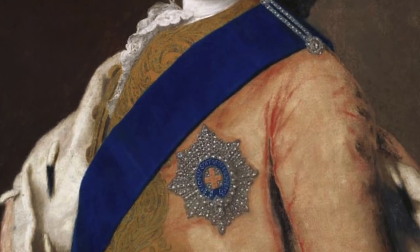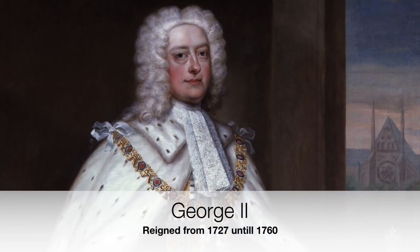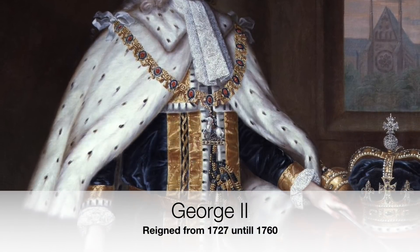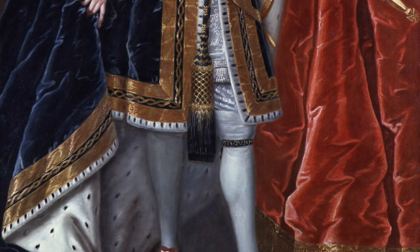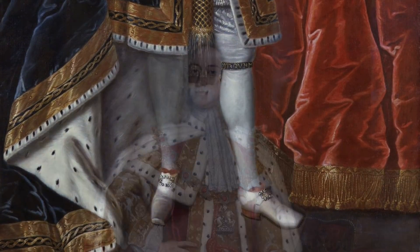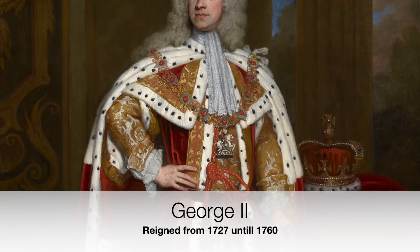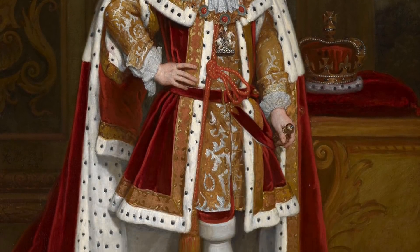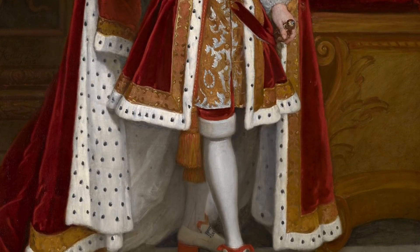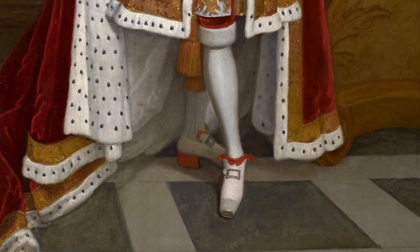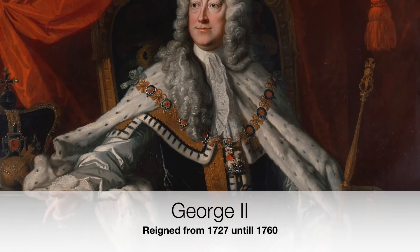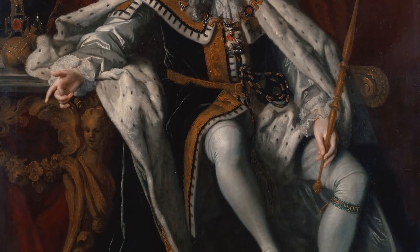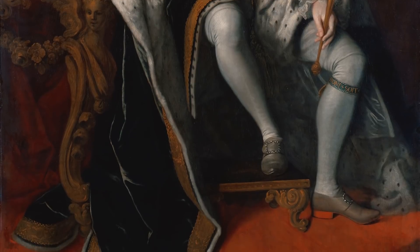Frederick was the direct descendant of King George II, his father. George II was King from 1727 until his passing in 1760. He is the most recent of British monarchs to be born outside of Great Britain, as he was born and raised in Northern Germany. The Act of Settlement in 1701 and the Acts of Union in 1707 enabled his grandmother, Sophia of Hanover, and her Protestant descendants to inherit the British throne. George's kingship exercised little control over British domestic policy, as this was largely controlled by Parliament. And George is a direct descendant from George I, his father.